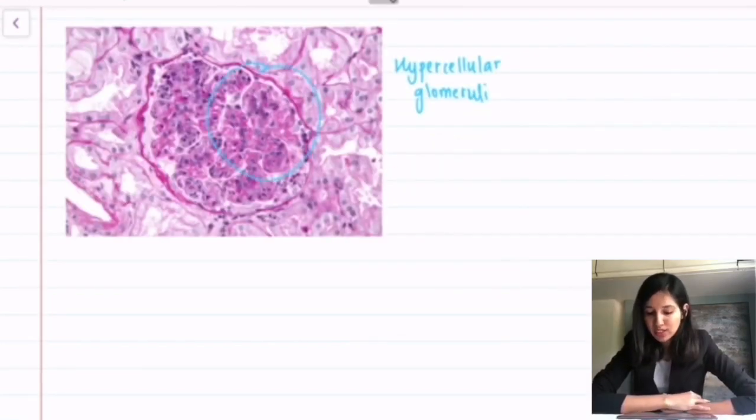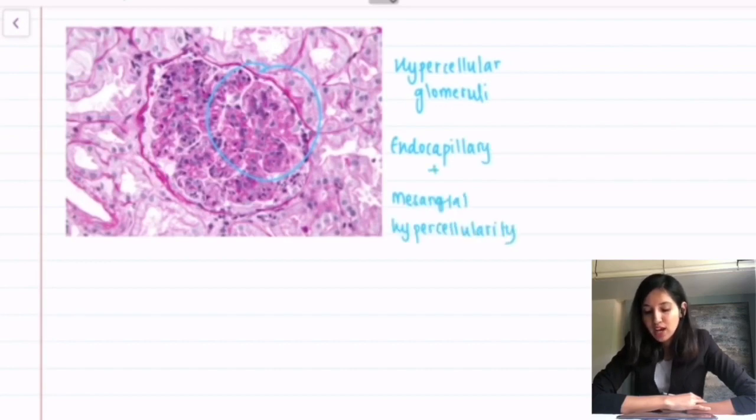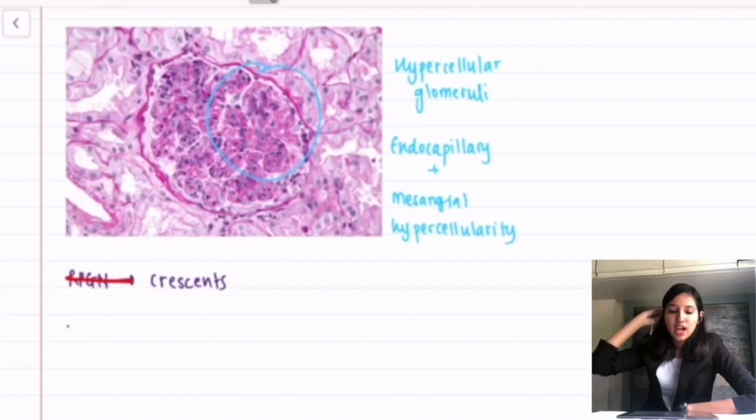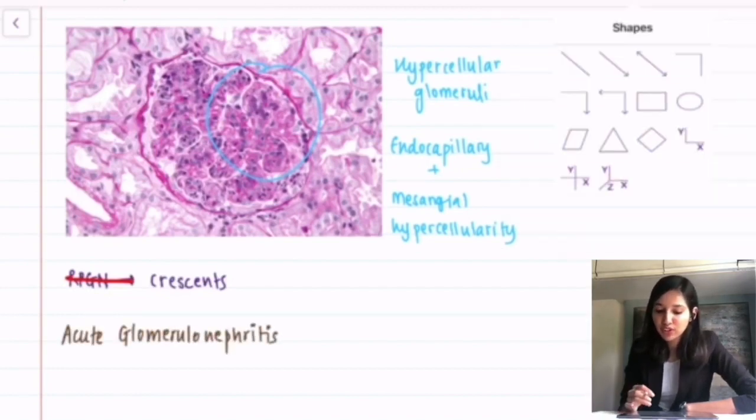We have been given this histological picture which shows endocapillary and mesangial hypercellularity that is diffuse proliferative glomerulonephritis. In RPGN, there are characteristic crescents which are not seen in this picture. Again, which rules out RPGN. So, now the most likely diagnosis becomes nephritic syndrome or acute glomerulonephritis.